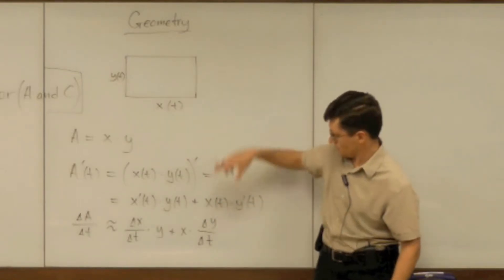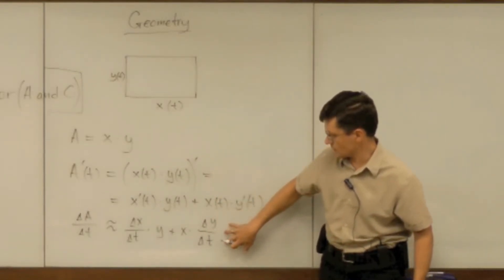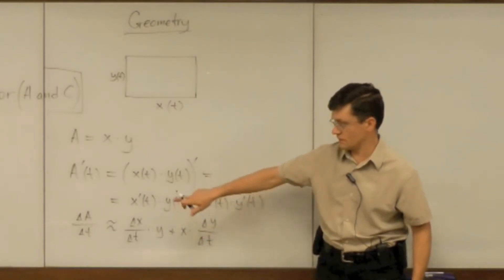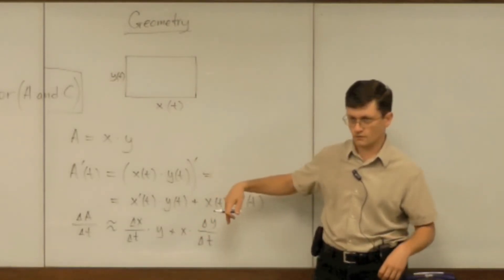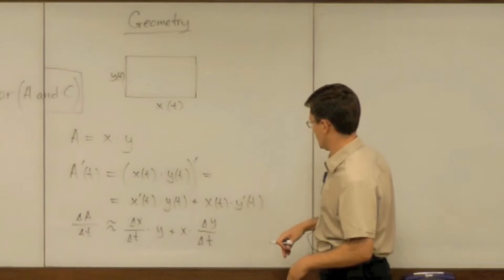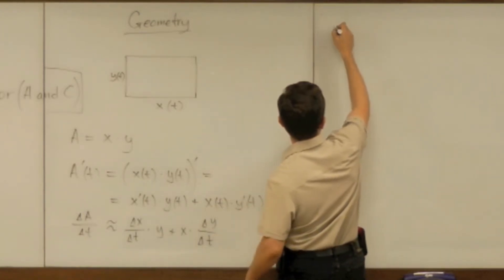In order to see some geometry about this, I would like to multiply by delta t all the sides and the equality I get, well, the approximate equality is